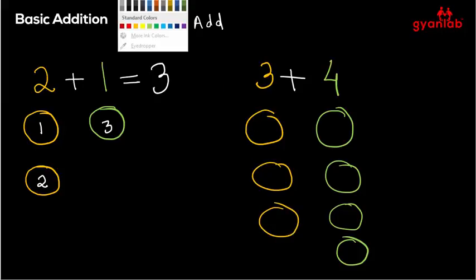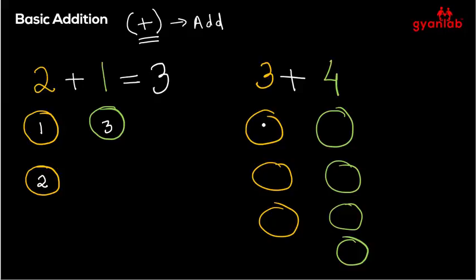Now our job is to start numbering them. This is one, two, three, then four, five, six, seven. Which means three plus four is equal to seven.